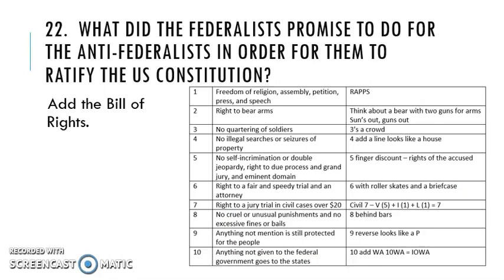Question 22 asked what did the Federalists promise to do for the Anti-Federalists in order for them to ratify the U.S. Constitution? Basically, they agreed to add the Bill of Rights. We went over it in class and did activities with it. Just make sure you know the Bill of Rights — you should know your rights that the government has provided for you and cannot take away.